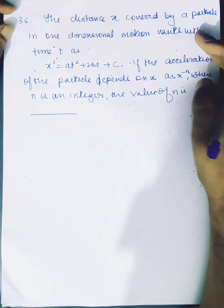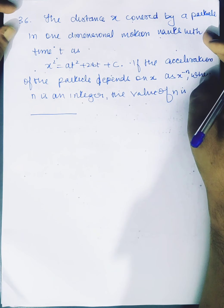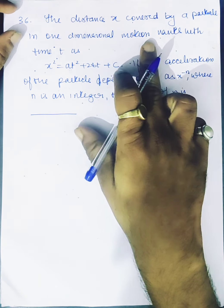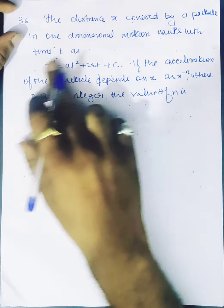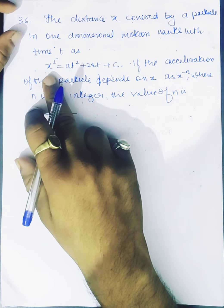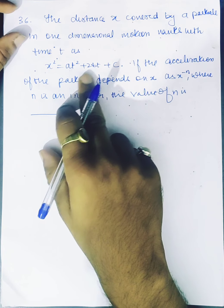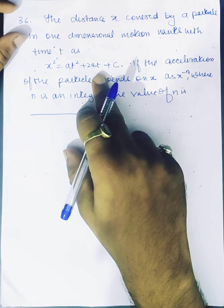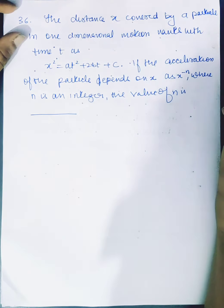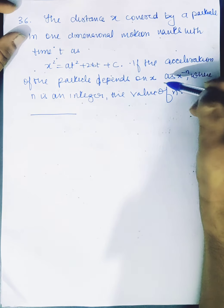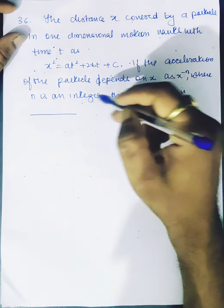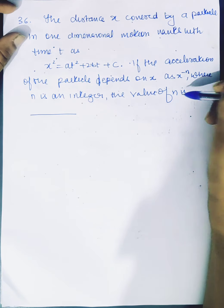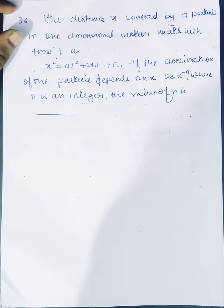The distance x covered by a particle in one dimensional motion varies with time as x squared equals at squared plus 2bt plus c. If the acceleration of the particle depends on x as x to the power minus n, where n is an integer, then find the value of n.